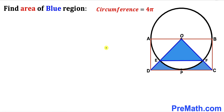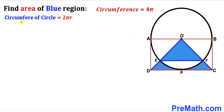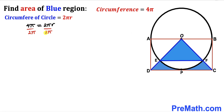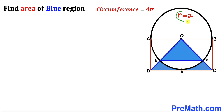Let's get started. We know the circumference of this circle is 4π, and now we are going to calculate the radius. Recall the circumference formula: C = 2πr. Since C = 4π, we write 4π = 2πr, then divide both sides by 2π. Therefore the radius r turns out to be 2 units.